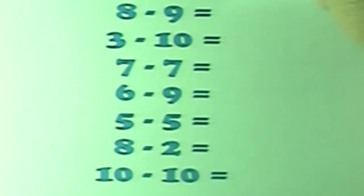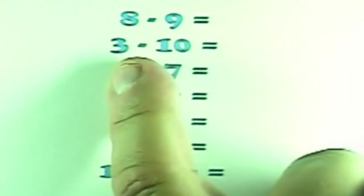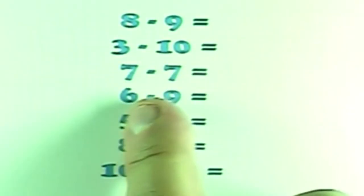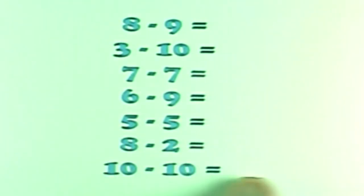Solve the following subtraction problems using your subtraction grid. And that would be 8 minus 9, 3 minus 10, 7 minus 7, 6 minus 9, 5 minus 5, 8 minus 2, and 10 minus 10.